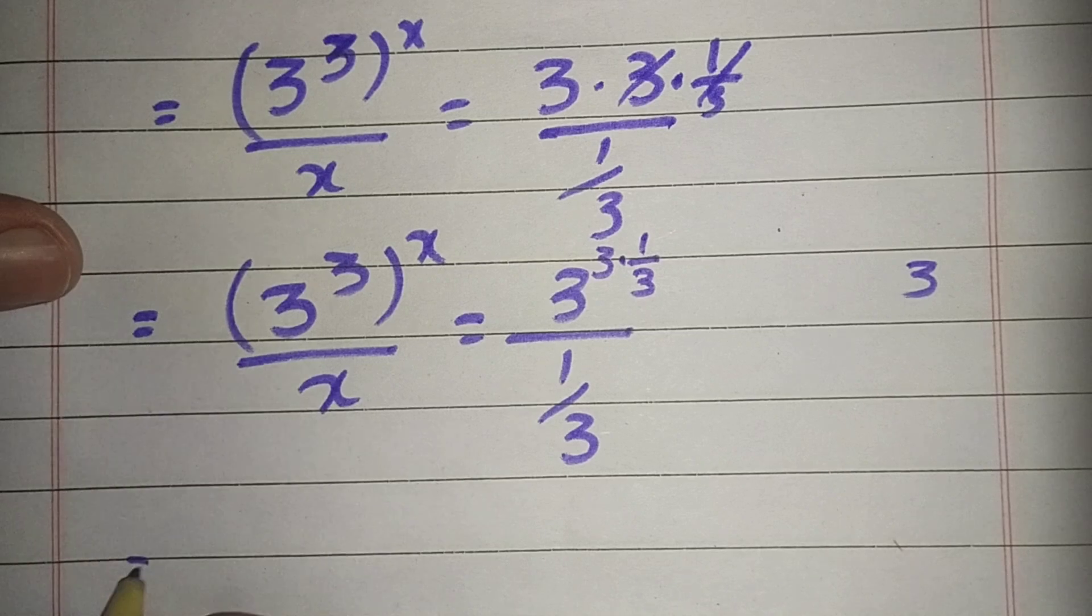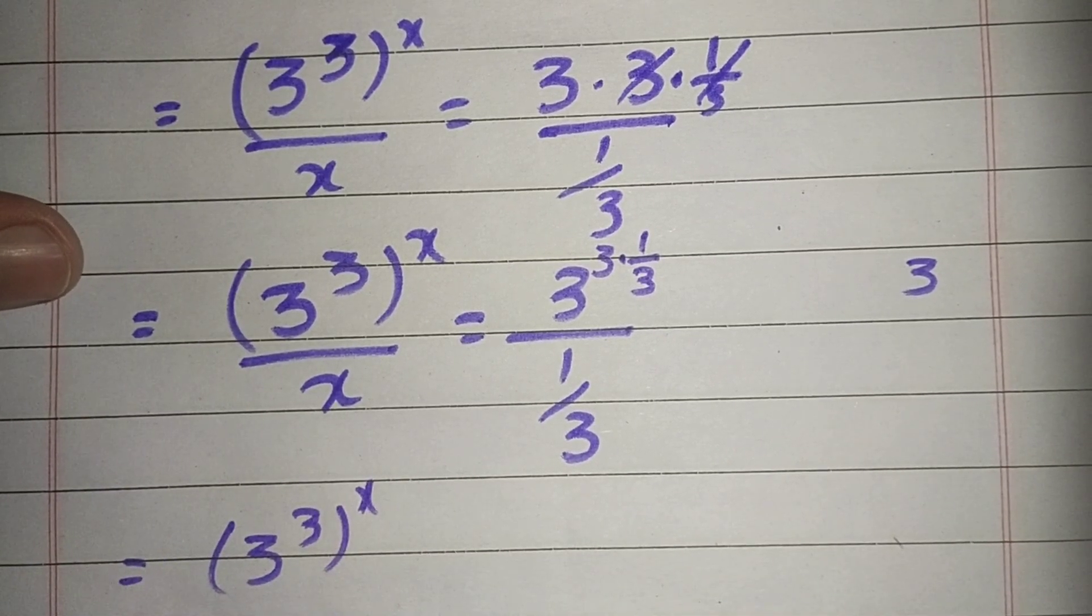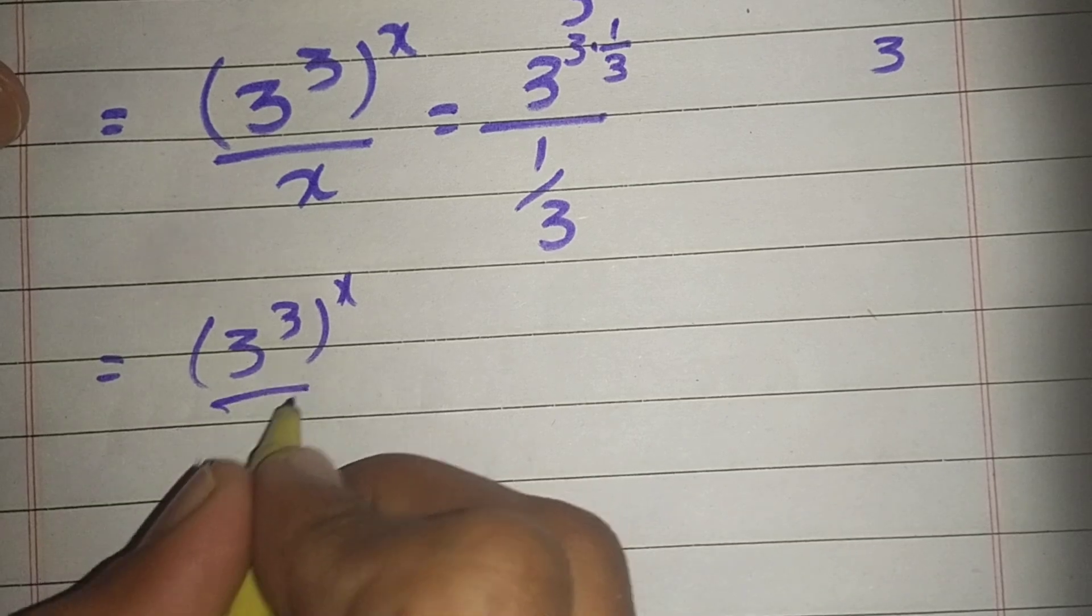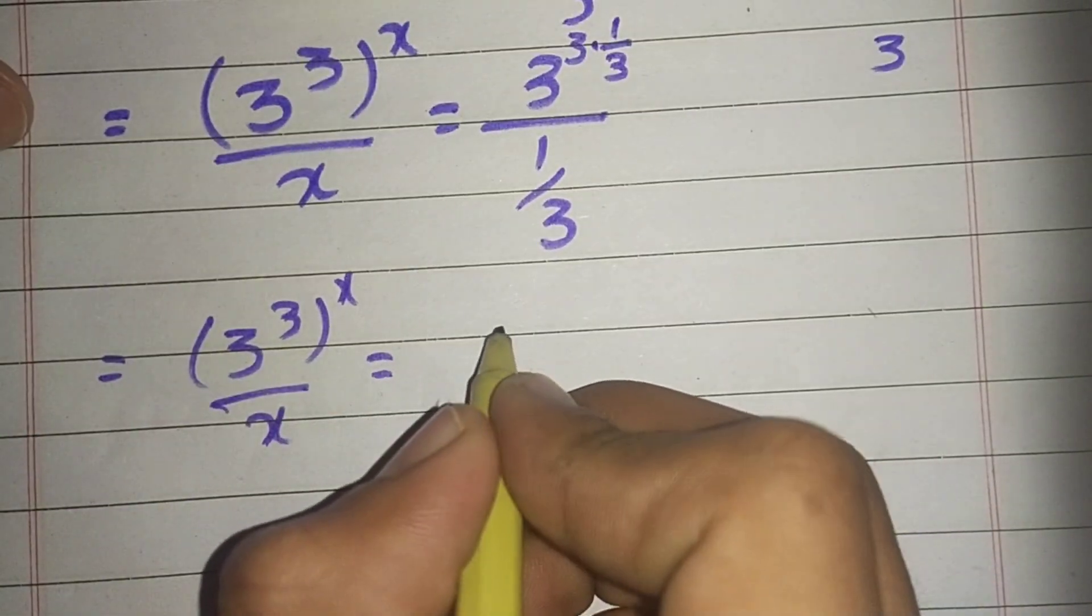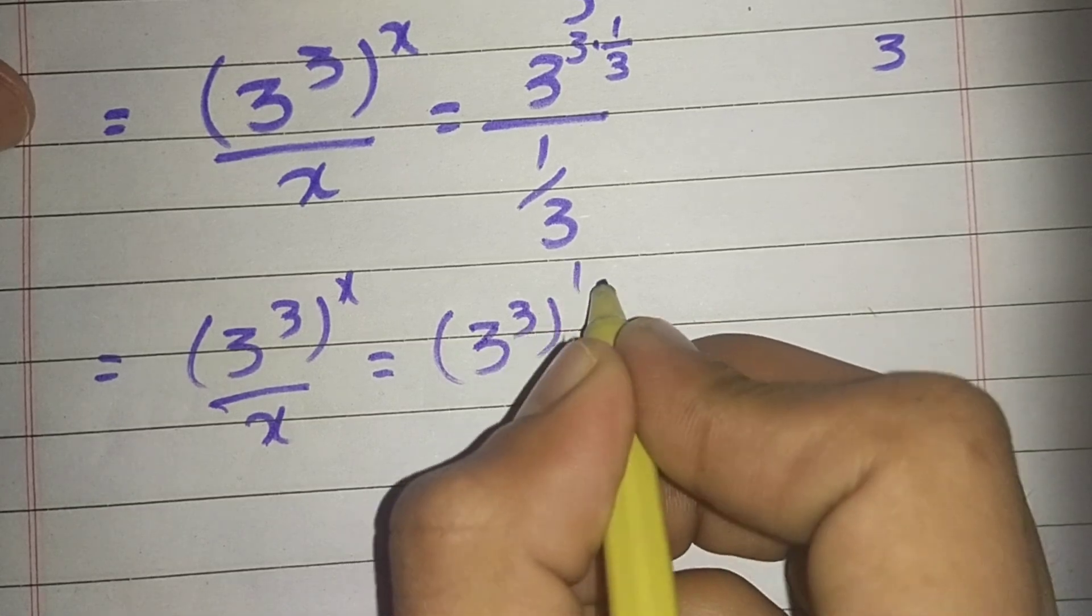This equation becomes 3 power 3 whole power x divided by x is equal to 3 cube whole power 1 divided by 3.